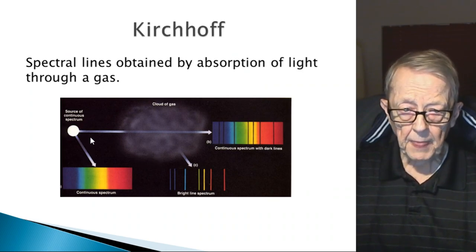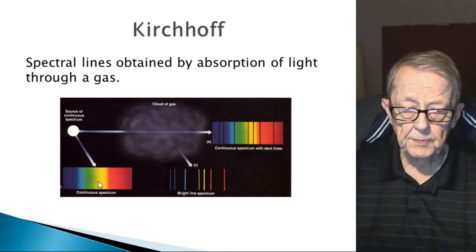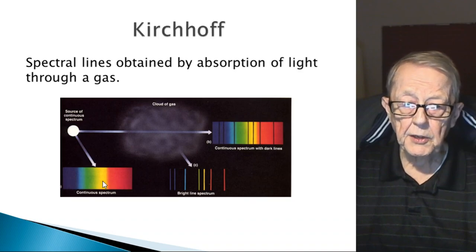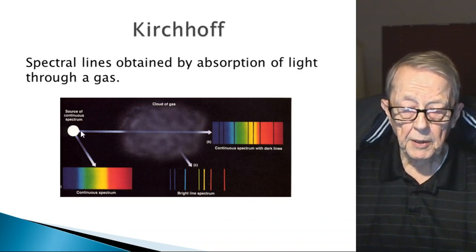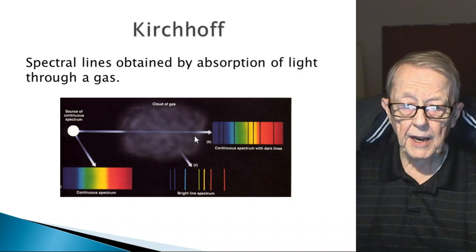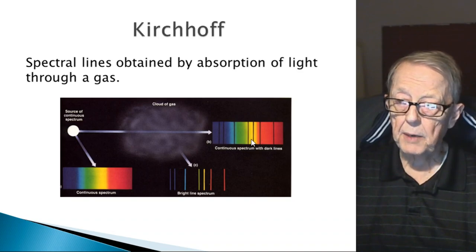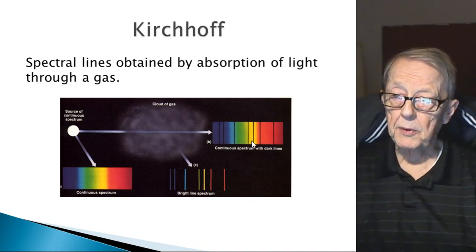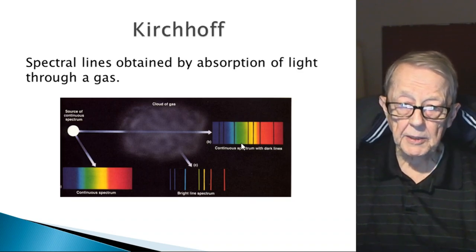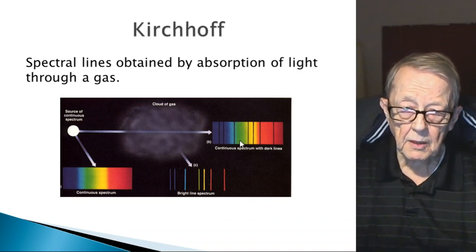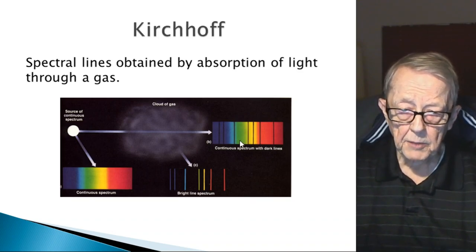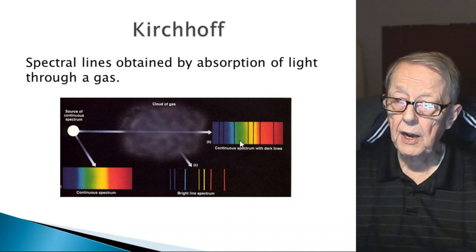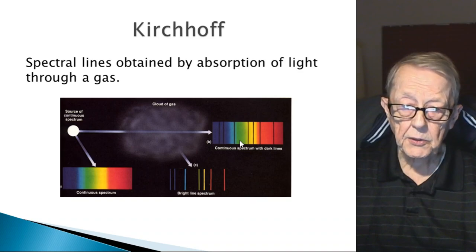Kirchhoff used a local source that had a continuous spectrum, but he shined it through a cloud of gas and also got these spectral lines — ending up with the same thing. Spectral lines show that things are not continuous.